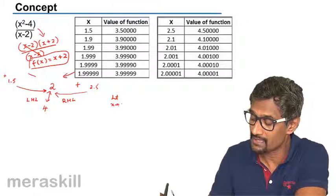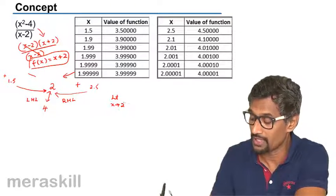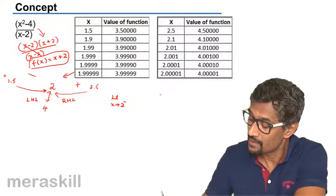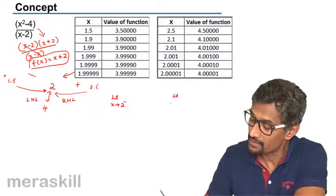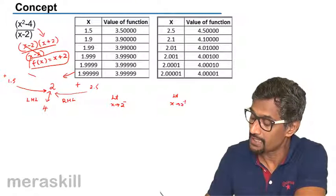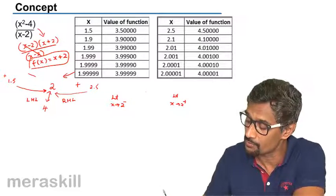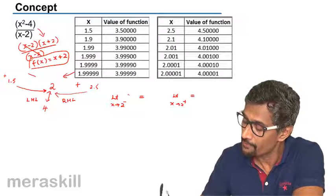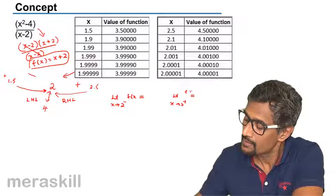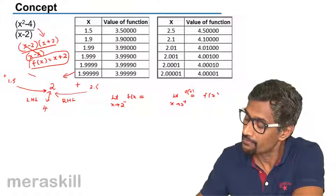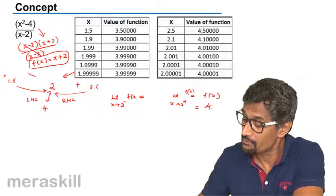That means the function ultimately turns into a determinate function X plus two. So in that case, limit as X tends to two, whether you take it minus or you take it plus, that is left hand limit or right hand limit, in that case F of X is going to be F of two, which is going to be four.